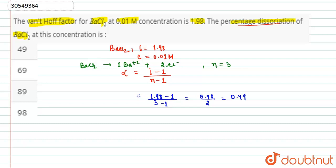What will the percentage dissociation be? Percentage dissociation will be equal to alpha times 100. So, 49 percent.